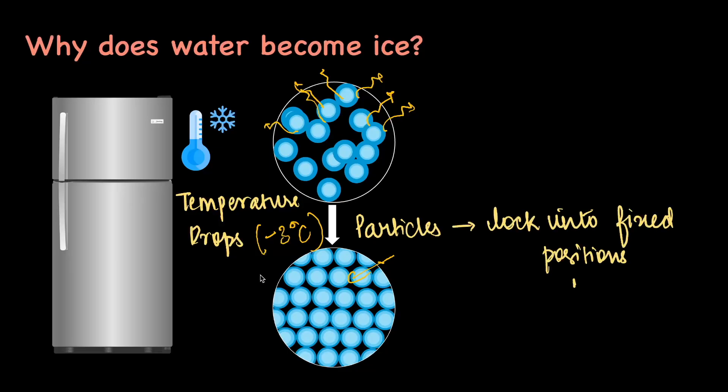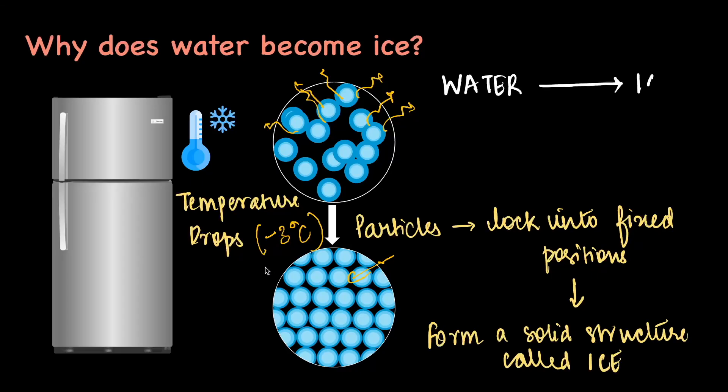And as a result of which, they end up forming a solid structure called ice. So effectively, water becomes ice when the temperature reduces. And this is very crucial to understand. So that is when we get the solid form of water. So now we have seen two forms. We have seen the solid as well as the liquid form.